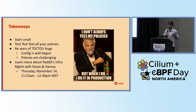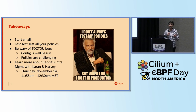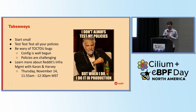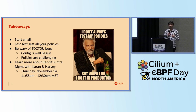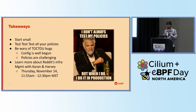In terms of takeaways: start small. Please test all your policies — there are a lot of edge-case bugs you can come across while implementing policies, because we're essentially interfacing with kernel functions. Having the right configuration is important, but having the wrong kind of policies can break your production workloads. So be mindful of what you're implementing and make sure to test as much as possible. If you're interested in learning more about Reddit's infrastructure, there was a cool talk on Thursday by Karan and Harvey on November 14th that you should check out.